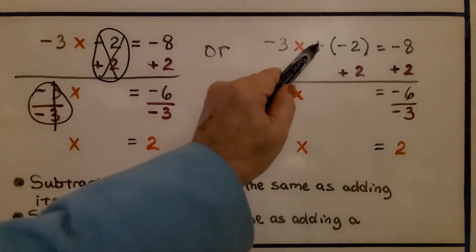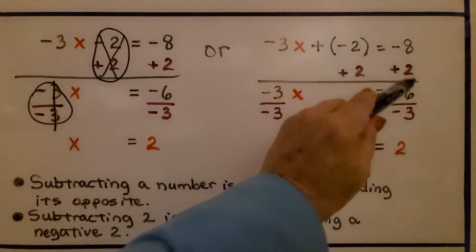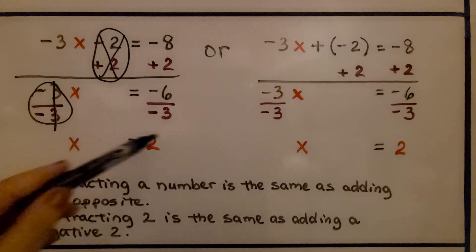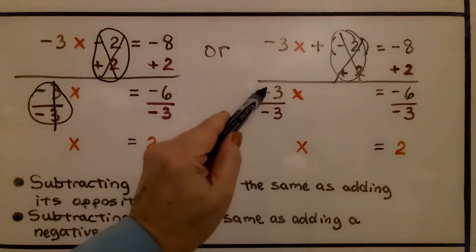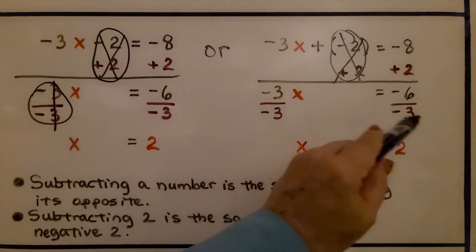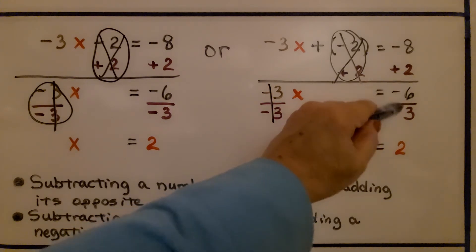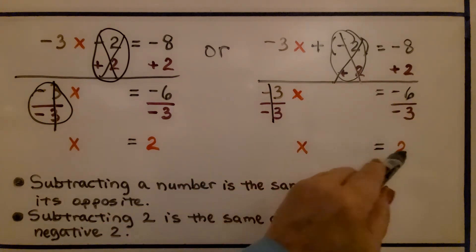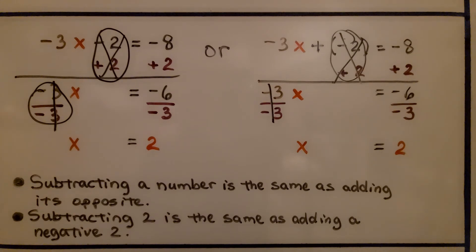Or we could do it by adding the opposite — adding a negative 2 to both sides of the equation. We get negative 3x is equal to negative 6 because we created a zero pair and eliminated that. We divide both sides by the coefficient negative 3. We have negative 3 on both sides, giving us 1x on this side. We have two negatives, so we get a positive, and negative 6 divided by negative 3 is positive 2. We got positive 2 whether we subtracted 2 or added the opposite by adding a negative 2. Subtracting a number is the same as adding its opposite — subtracting 2 is the same as adding a negative 2.